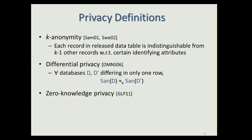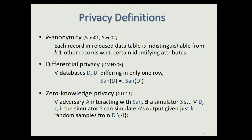Roughly speaking, zero-knowledge privacy requires that whatever an adversary learns about an individual I from the database mechanism, he or she could have learned from just knowing K of the remaining individuals in the database, where K is strictly less than N, the size of the database. More formally, we require that for every adversary A interacting with mechanism ZAN, there exists a simulator F such that for every database D, every auxiliary input Z, and every individual I, the simulator can simulate the adversary's output given just K random samples from the remaining individuals. We require the output distribution of A to be epsilon-close to the output distribution of the simulator.